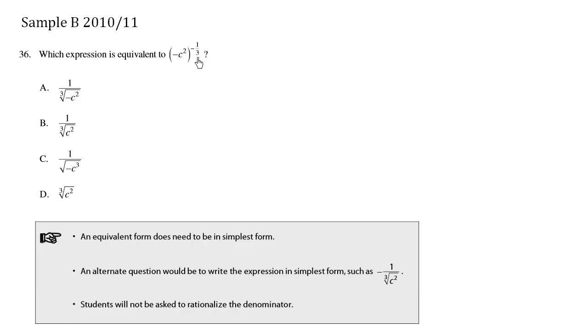So we have a negative exponent, so I'm going to go 1 over. This here equals 1 over negative c squared, that's the part within the brackets, and this whole thing is going to be to the 1 third.